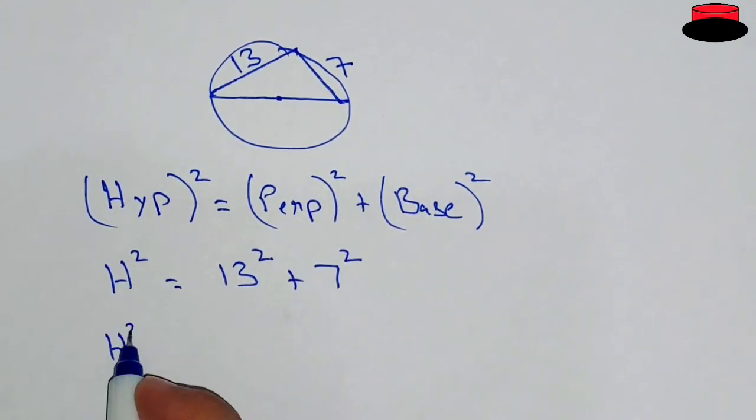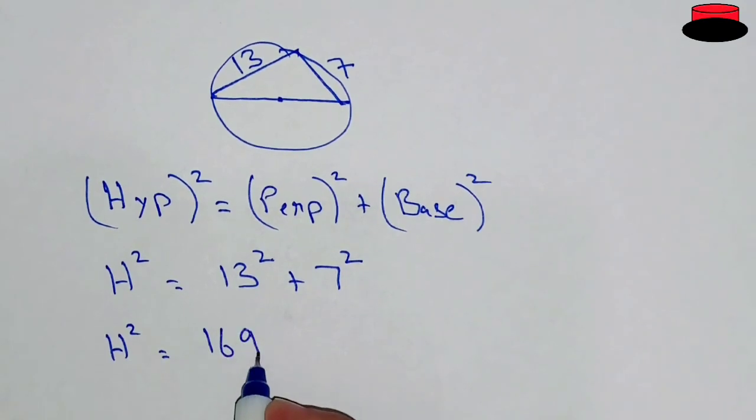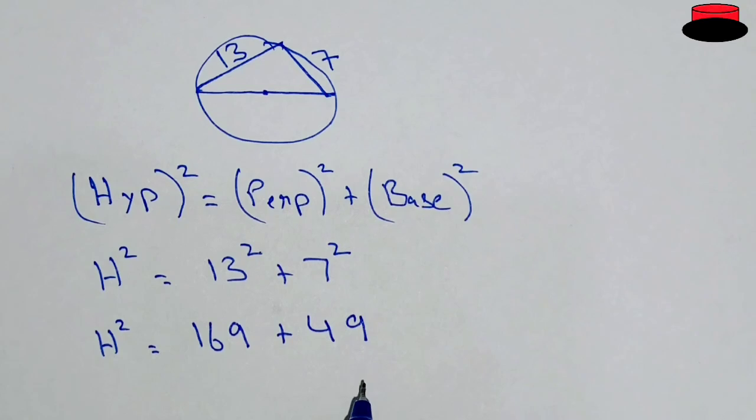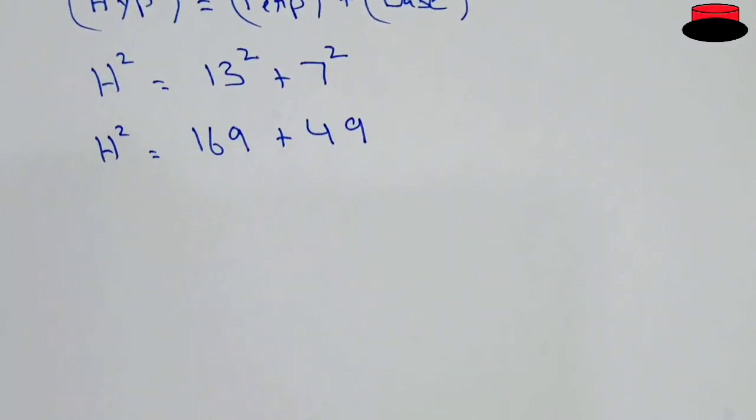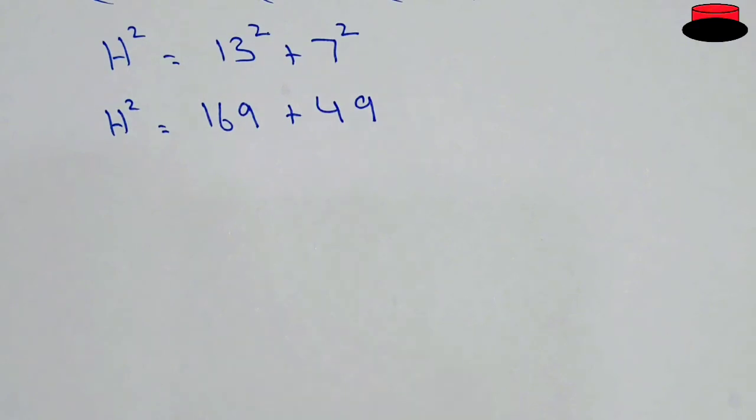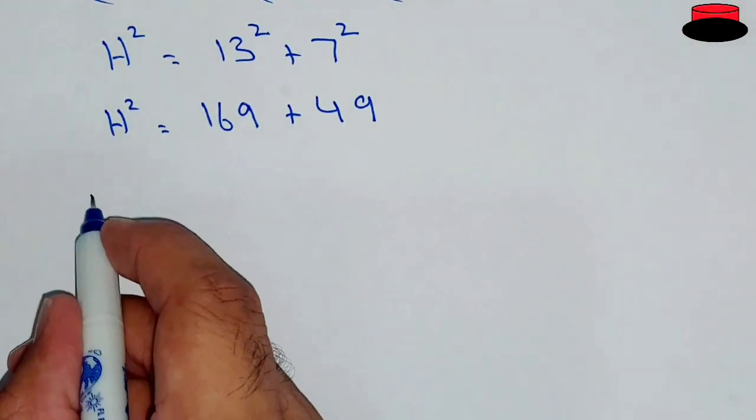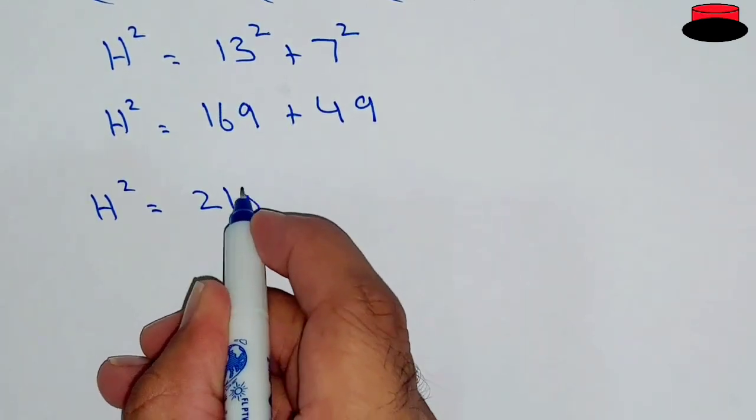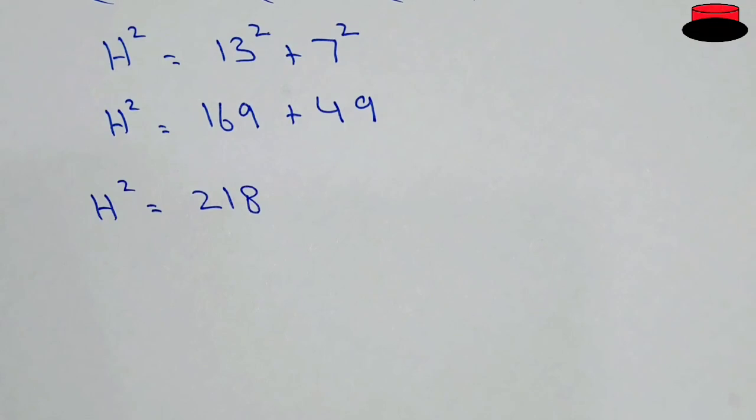Now here we have hypotenuse squared equal to 13 squared is 169 and 7 squared is 49. So we will add both of these, so it will be hypotenuse squared equal to 218.